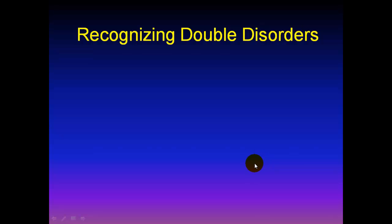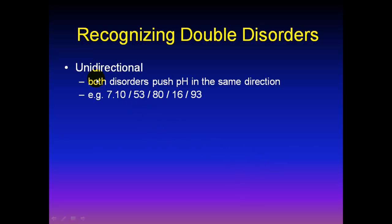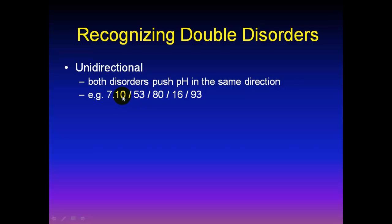Starting the talk: how do we recognize double disorders? Some of these disorders — I'll call them unidirectional — recognize that both disorders push the pH in the same direction. For example, a very low pH of 7.10 is an acidosis. We recognize a respiratory acidosis from the elevated pCO2, but when we look for compensation, we realize the bicarb is low — it's also a metabolic acidosis. A respiratory acidosis would never be compensated by a metabolic acidosis, so we can be confident both disorders are primary. This is a primary respiratory acidosis and a primary metabolic acidosis.